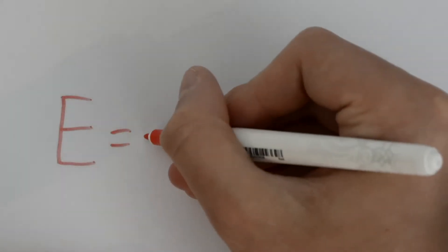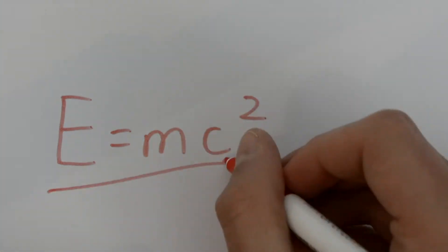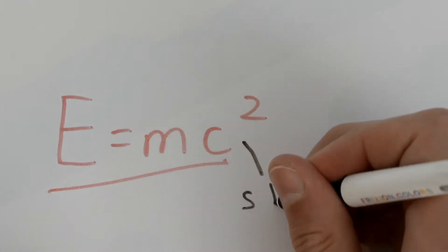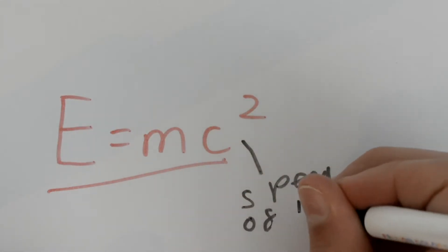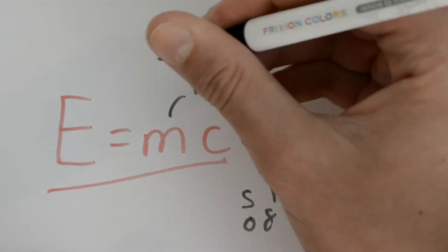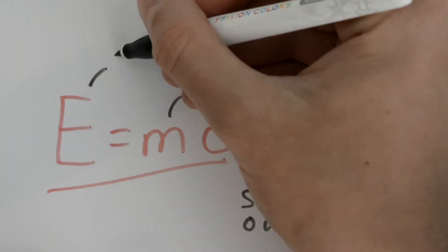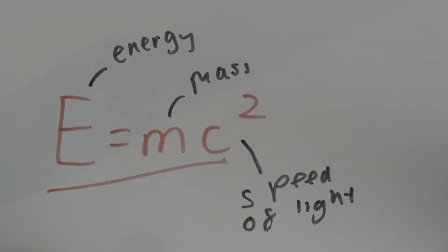E equals mc squared is probably the most famous equation of all time, coined by Albert Einstein in 1905 to explain the relationship between matter and energy. In its simplest terms, it basically means that the energy of a particle is proportional to its mass, by a factor of the speed of light — or: energy equals the mass of a particle times the speed of light squared.